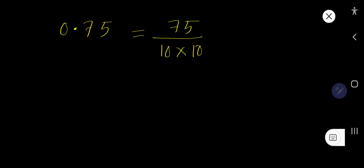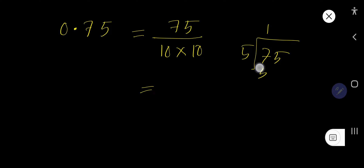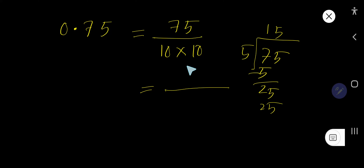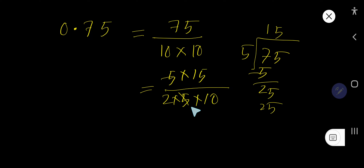Now you need to break down 75. The unit digit is 5, so it is divisible by 5. We can break down 75 as 5 times 15. We can also break down 100 as 10 times 10, and then break one 10 as 2 times 5. The 5s cancel each other, so we are getting 15 over 2 times 10.